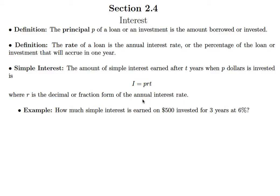The way to think of interest is in the case of investing, say in a bank account like a CD account, the bank is going to pay you money for the privilege of borrowing your money essentially. Because when you put money in the bank, you're essentially loaning them money for them to work with. And then if you take out a loan, you pay interest because you are paying the institution you're borrowing from for the privilege of using their money. And so we use percents to calculate interest, and that's how it fits in with what we've been doing this whole chapter.